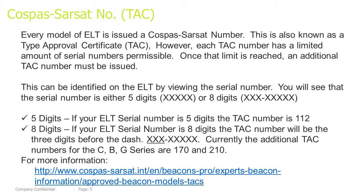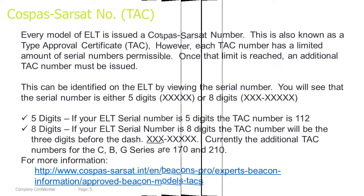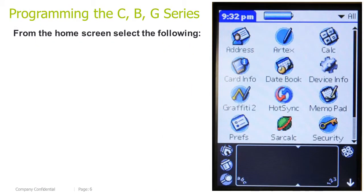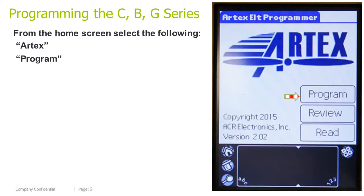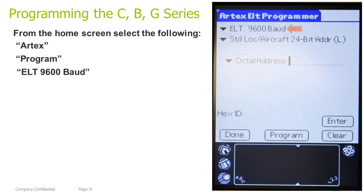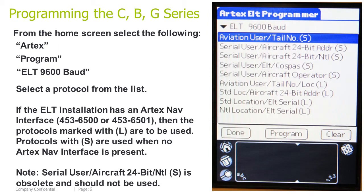For more information, you may follow the link below at cospas-sarsat.int. Programming the C, B, and G series. From the home screen, select the following: Artex, Program, ELT 9600 Baud, and then select a protocol from the list to your right.